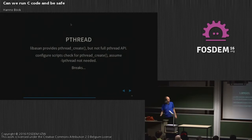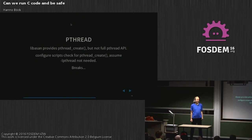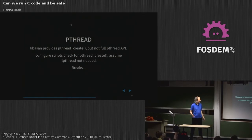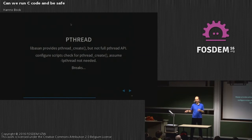With libpthread, the problem is that the AddressSanitizer library provides some pthread functions because it hooks them to record what memory exists, but not all of them. What happens is that if a configure script checks if pthread_create exists, it says this function exists, I don't need to link the library in because it's already available. But then the compilation breaks because the other functions are not available. I'm still not sure what the best solution for this is. This problem was present in SQLite, and I sent a patch to check for another function. But a few days later, someone complained it would break on FreeBSD.